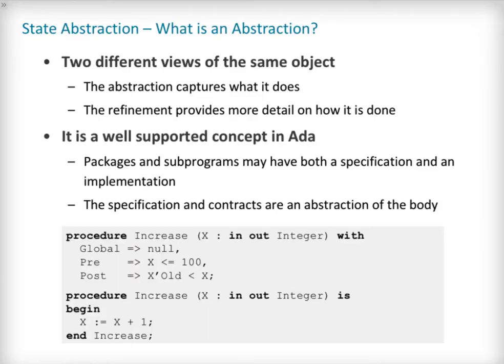The abstraction principle is commonly used in programming languages and consists in having two views of the same object: an abstract one and a refined one. The abstract one, usually called specification, only describes what the object does in a coarse way. A subprogram specification usually explains how it should be called, how many parameters it has, of which type, etc., as well as what it will do — return a result, modify one of its parameters, etc.